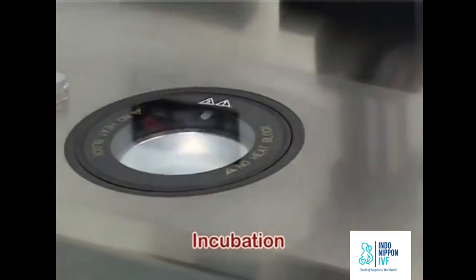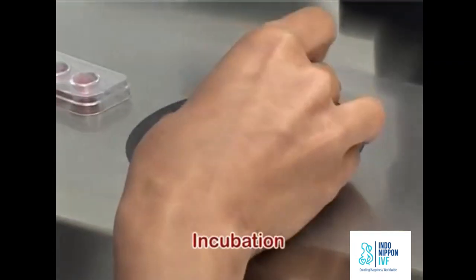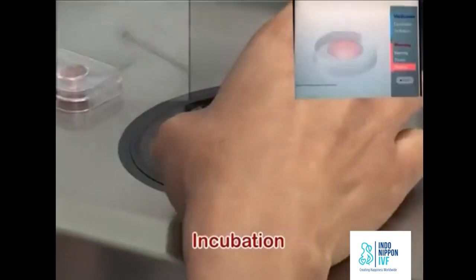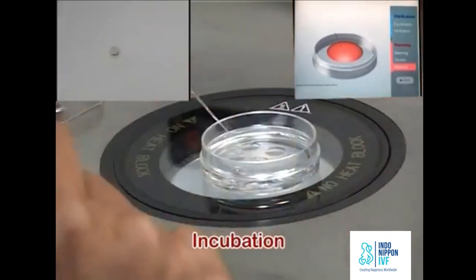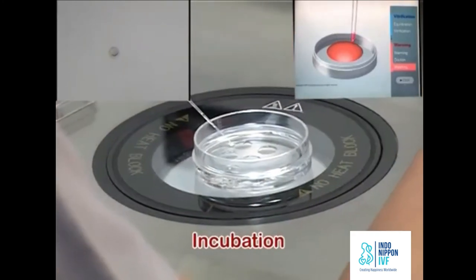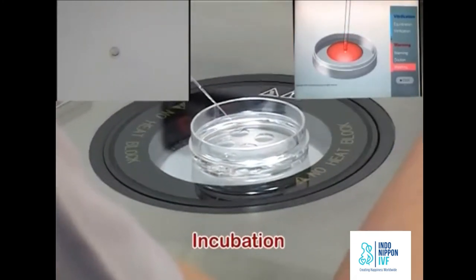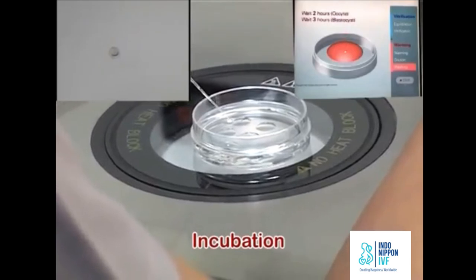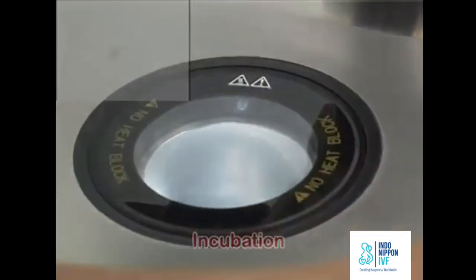Transfer the oocyte in the droplet of the appropriate culture media for recovery. After warming, 4 hours culture for oocyte is recommended as the spindle recovery takes about 3 to 4 hours. So wait for 4 hours after warming before fertilizing the oocyte with ICSI.